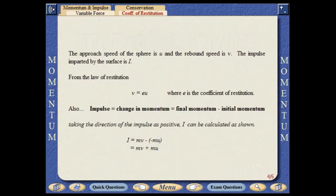The approach speed of the sphere is U, and the rebound speed is V. The impulse imparted by the surface is I. From the law of restitution, V equals EU, where E is the coefficient of restitution. Also, impulse equals change in momentum equals final momentum minus initial momentum. Taking the direction of the impulse as positive, I can be calculated as shown.